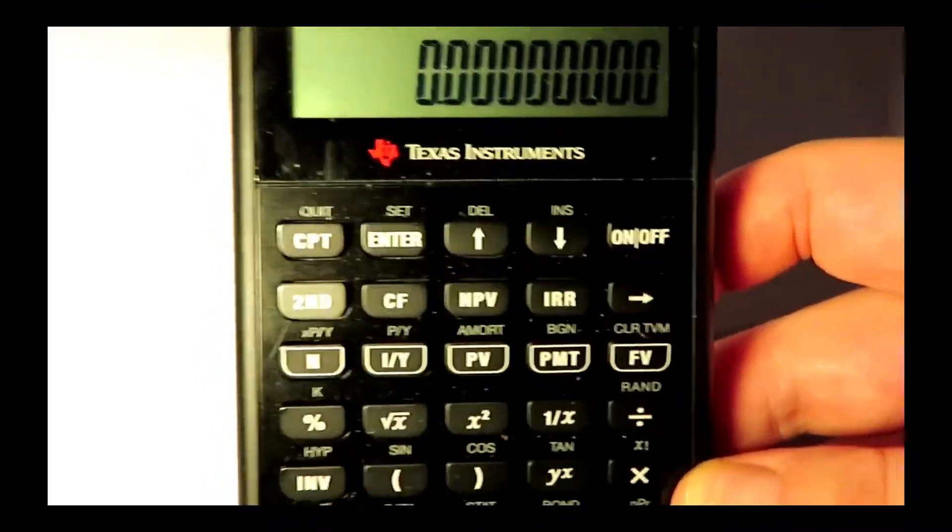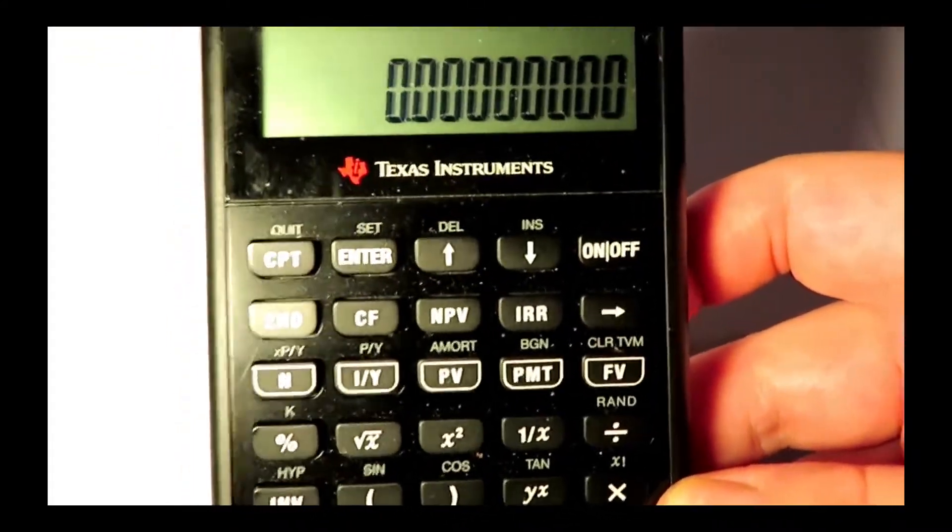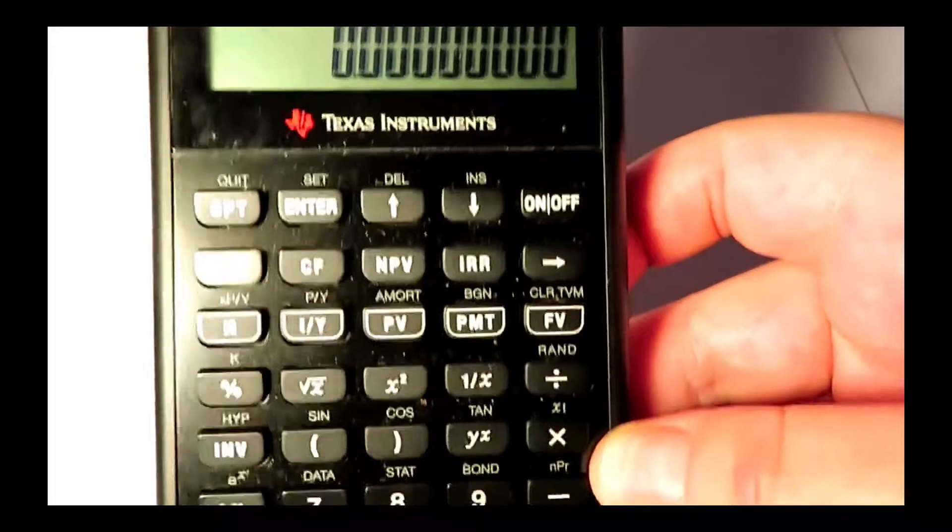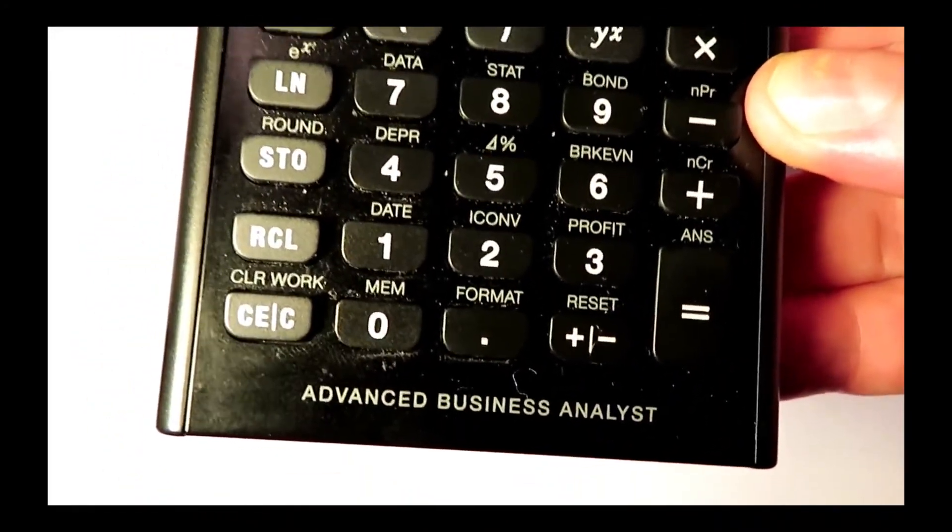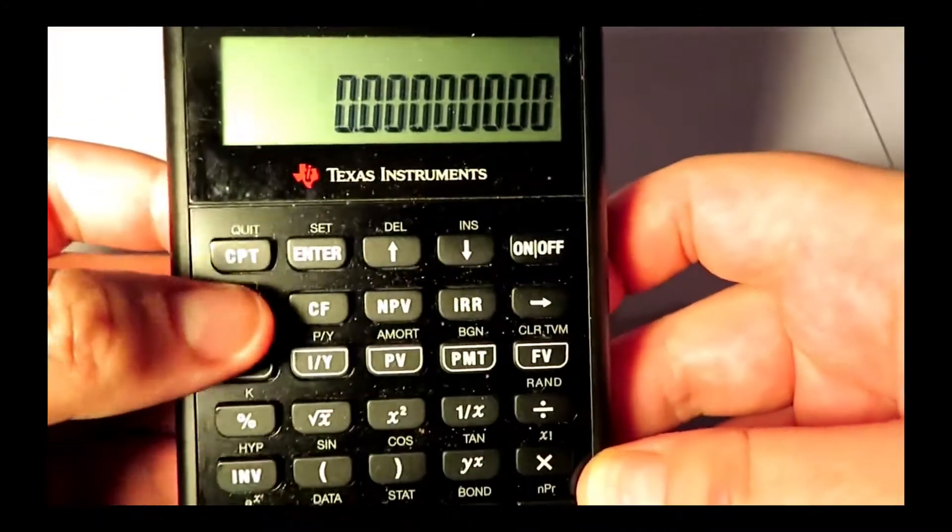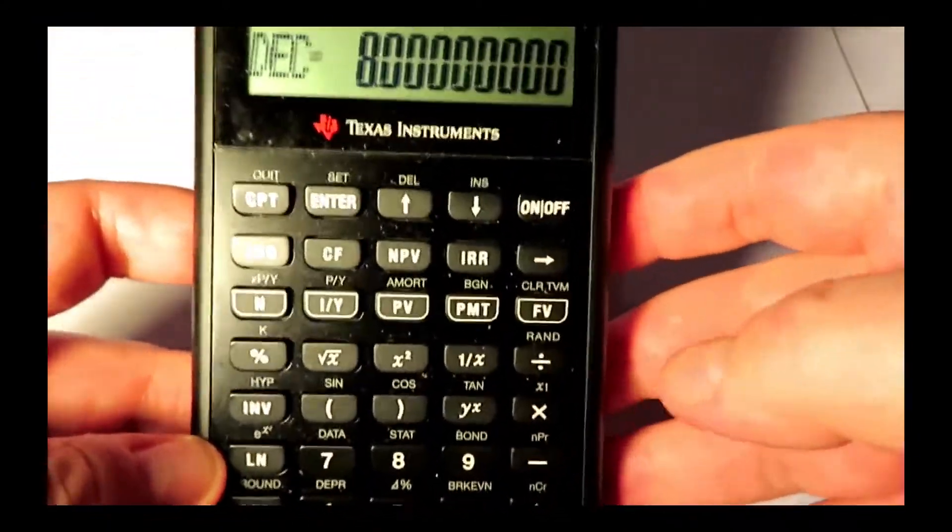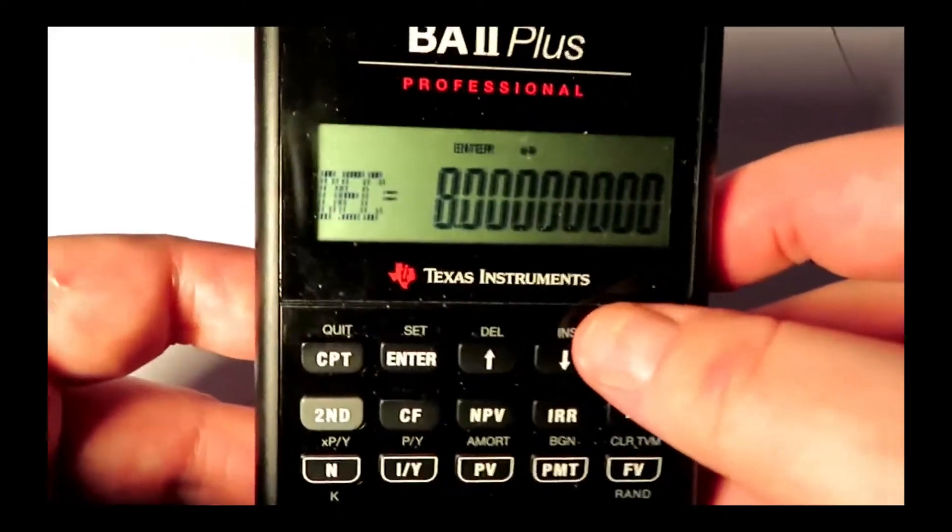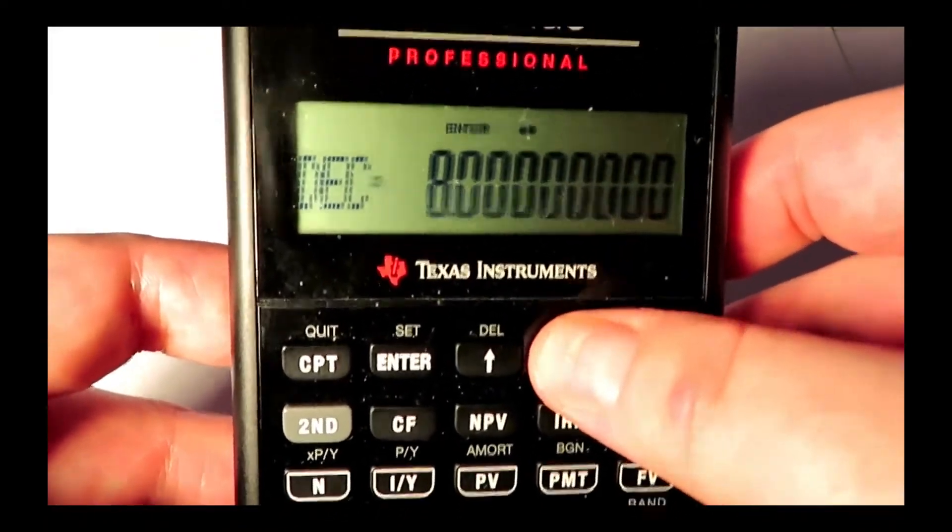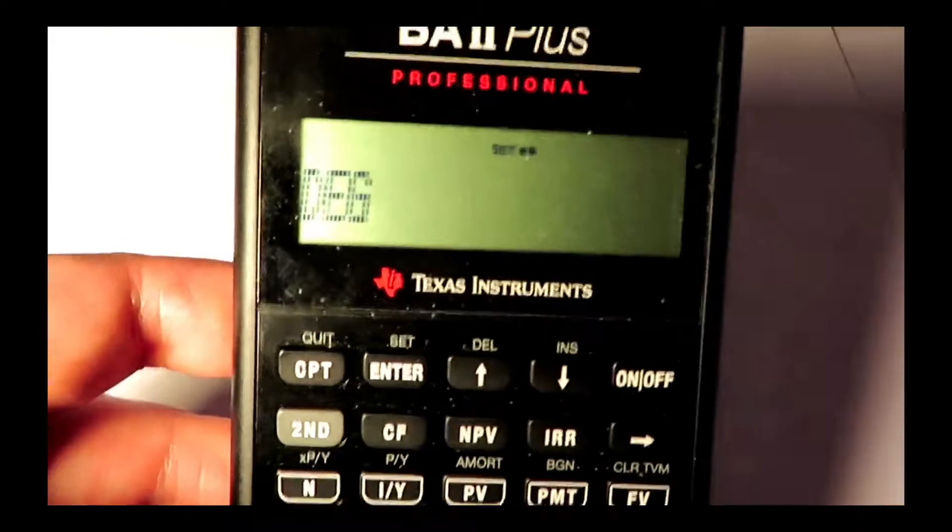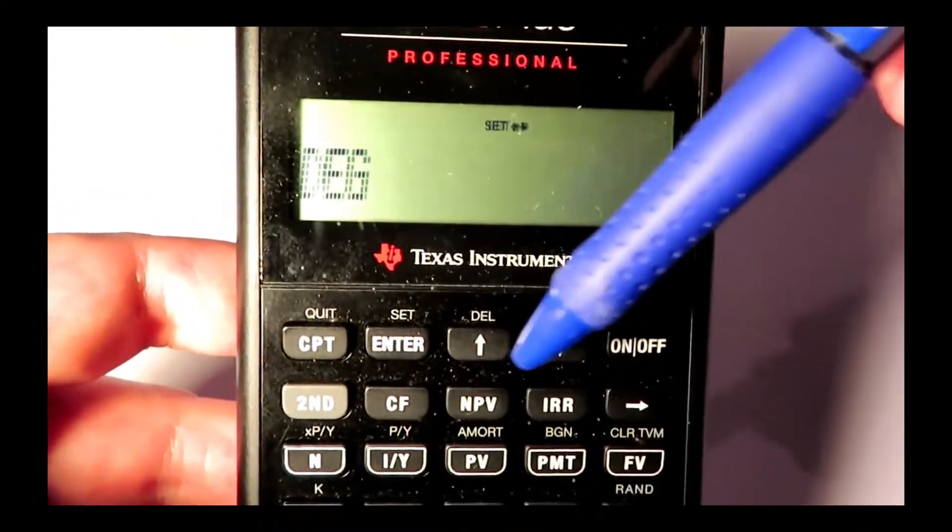Alright, and as for the bonus tip, we're going to talk about other settings you can set up in that format menu. So let's push second again, and then the decimal place for the format menu. Here we have decimal places which we just walked through. Now, if you push down, these up and down buttons here, you can go through the menu.